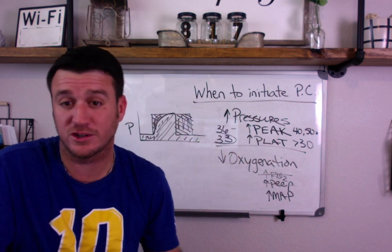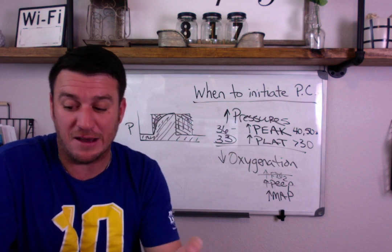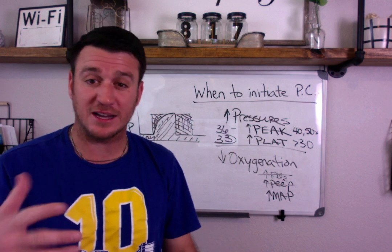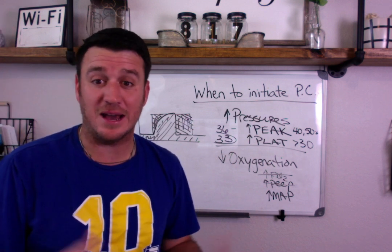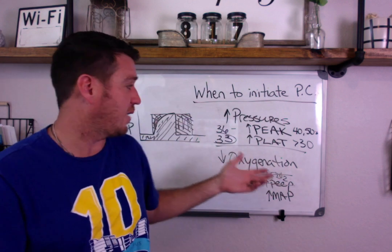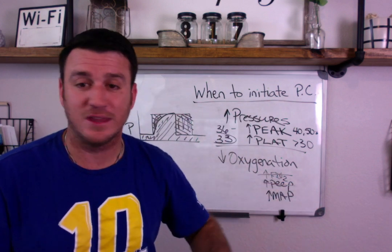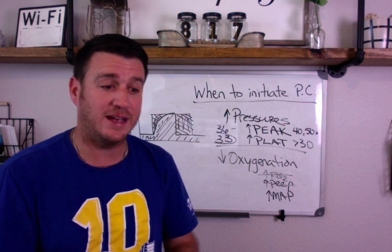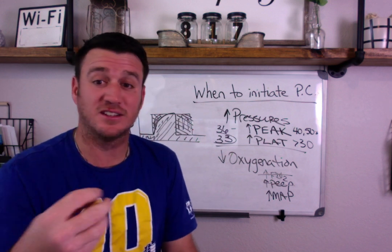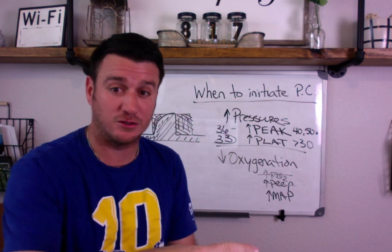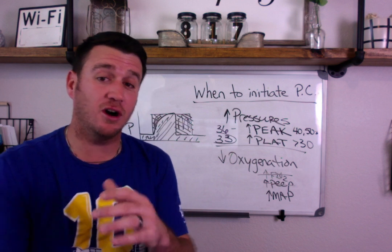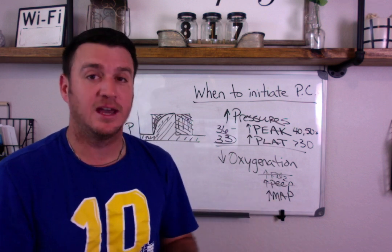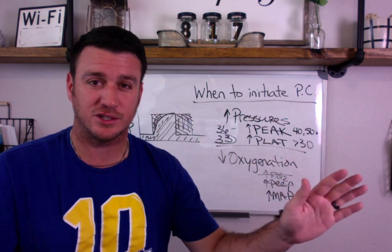Those are the situations where you would consider going into pressure control. But there is one outlier scenario. Take an emphysema patient, for example — you know they're going to have increased compliance because their lungs are big and floppy, so you probably won't see high inspiratory pressures and they may not be having an oxygenation problem. You might never think to go to pressure control. Stop right there, because that's when you get in trouble. If an emphysema patient has evidence on a chest X-ray or CT scan of excessive blebs, you are at risk of barotrauma even at lower pressures. You might want to consider pressure control early on to prevent barotrauma, which can lead to a pneumothorax.